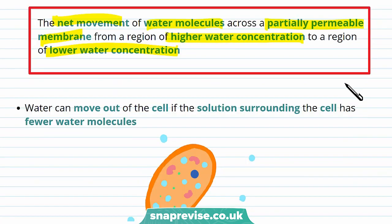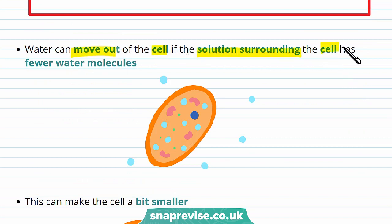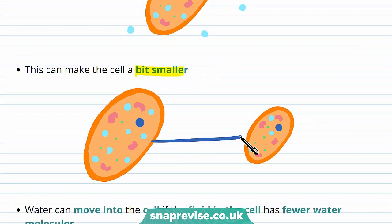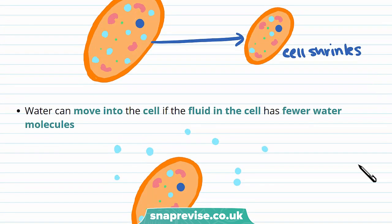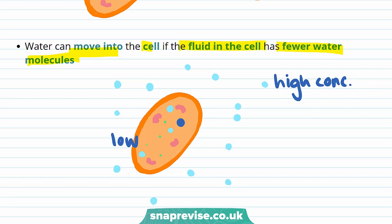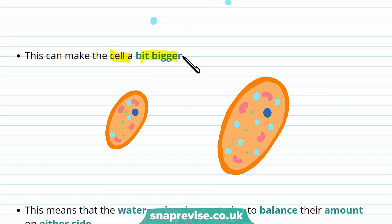Water can move out of the cell if the solution surrounding the cell has fewer water molecules — water will move out of the cell down the concentration gradient, which can make the cell smaller. So if water leaves, the cell shrinks. However, the opposite can occur: water can move into the cell if the fluid in the cell has fewer water molecules. There's a low concentration of water molecules inside the cell and a high concentration outside, so water molecules enter the cell from high to low concentration, down the concentration gradient, making the cell bigger as it swells up.